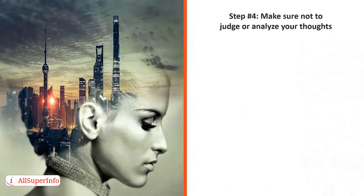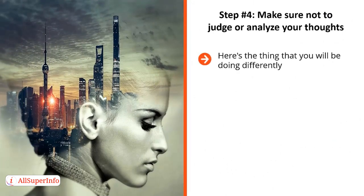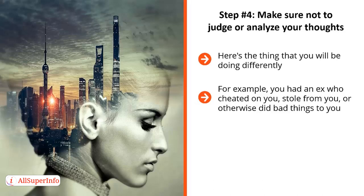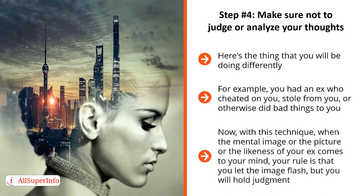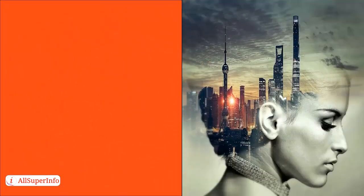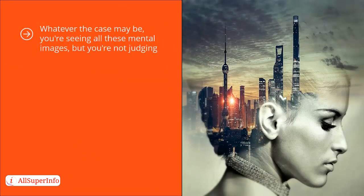Step number four: make sure not to judge or analyze your thoughts. Most people have no problem seeing mental images flash through their mind, but the problem is, once that happens, they get all emotionally caught up. For example, you had an ex who cheated on you, stole from you, or otherwise did bad things to you — how do you think you would feel when you see something that reminds you of him or her? With this technique, when the mental image of your ex comes to your mind, your rule is that you let the image flash, but you will hold judgment. You're not going to analyze it. You're just going to acknowledge it — this is the image of my ex, this is the image of my boss, this is a scene from my childhood. You're seeing all these mental images, but you're not judging. You are acknowledging. It's very important that you know the distinction.